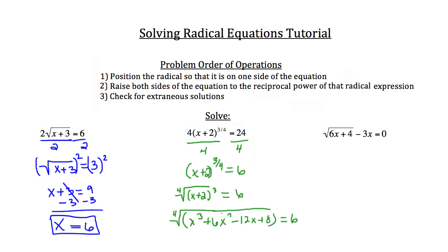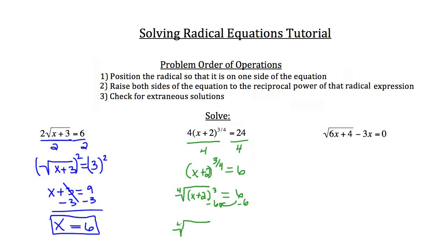However, you shouldn't go in that direction with this problem. It's easier to leave it in simplified form — subtract 6 from both sides and set the problem equal to 0. You can simply write it as the fourth root of x plus 2 cubed minus 6 equals 0, and then solve it as a quadratic. I would leave it in this simplified form.